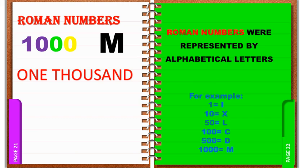In the previous, we said that Roman numbers were represented by the alphabetical letters. For example: 1 represents I, 10 represents X, 50 represents L, 100 represents C, 500 represents D, 1000 represents M.